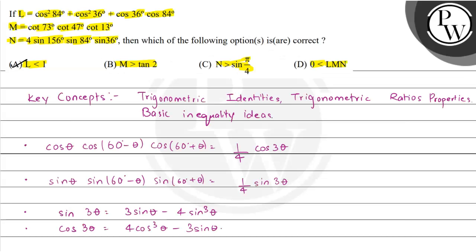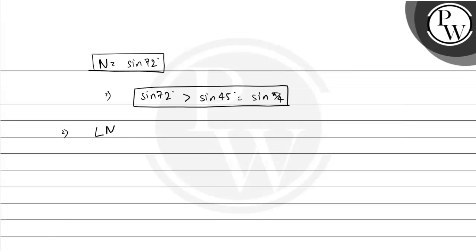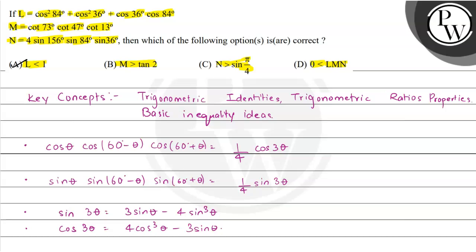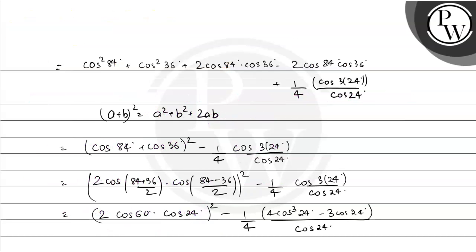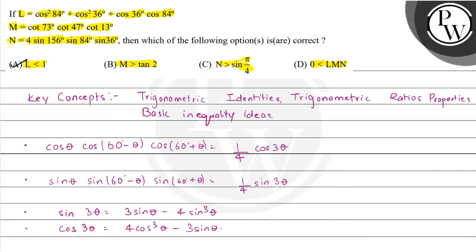Also, all of L, M, and N are positive numbers, hence L times M times N is also greater than 0 because all three are positive. So our final answer: option A is correct because L equals 3 upon 4 and L is lesser than 1. Option B is also true because M is greater than tan 2. Option C is also true because N is greater than sine of pi by 4. And option D is also true because L times M times N is greater than 0. So all options — A, B, C, and D — are correct. I hope you all understood it well, and best of luck.